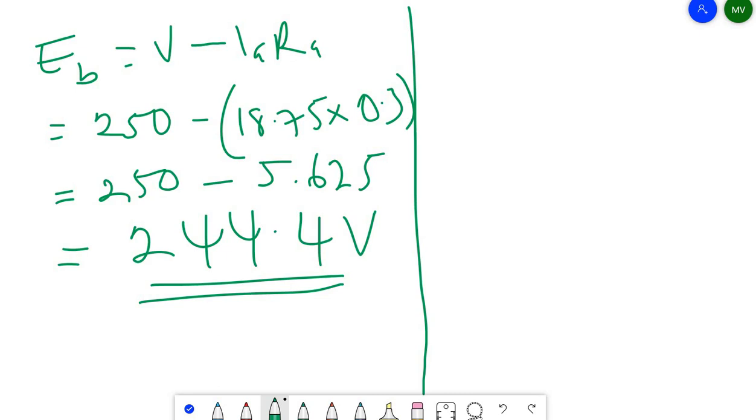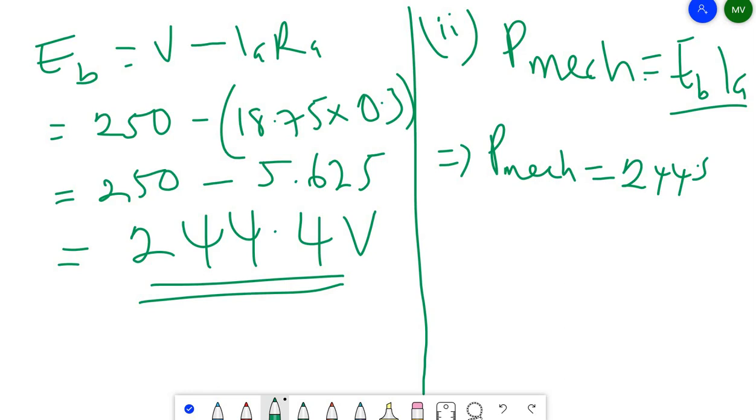Then the second one, that is (ii), is asking for the mechanical power, the total mechanical power. That's a simple thing to do because we know that our mechanical power, Pmech, as far as the armature is concerned is giving us Eb × Ia. So our Pmech is going to be equal to what?